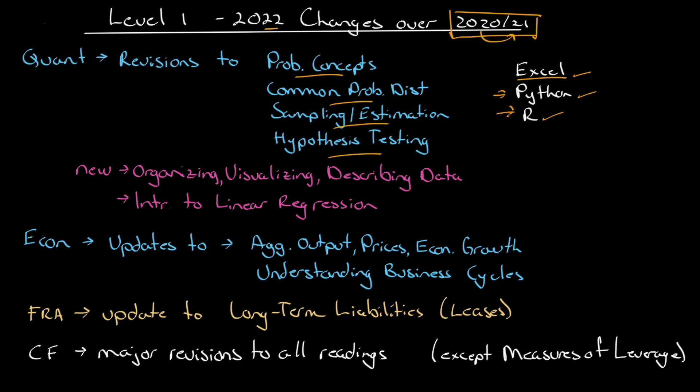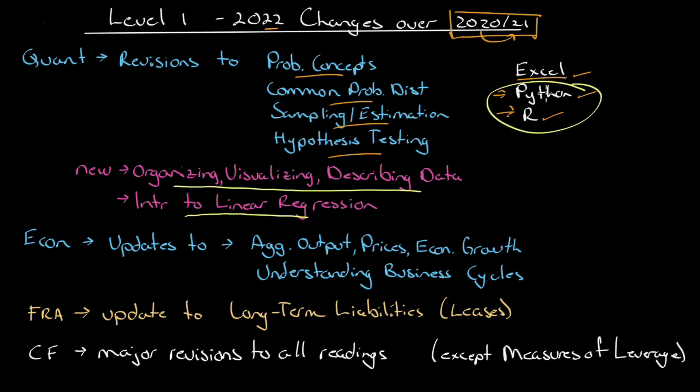New in Quant is a reading on organizing, visualizing, and describing data — a whole new set of chart types introduced in this reading, which was previously at Level 2 and is being brought down to Level 1. Also new is an introduction to linear regression. So Quant has had a major facelift and has been brought more into the current environment by including Python and R code snippets to run different statistical analyses.